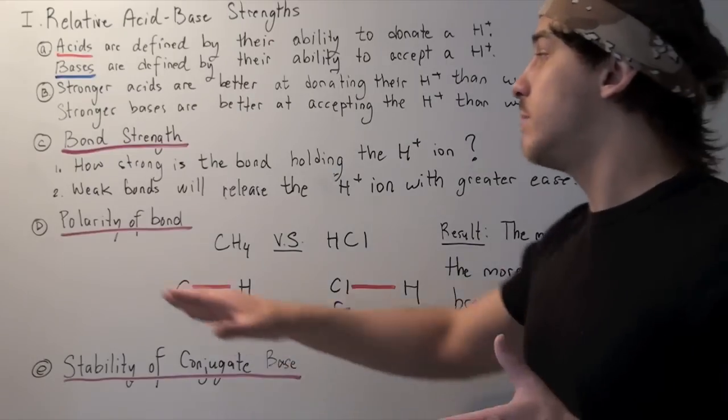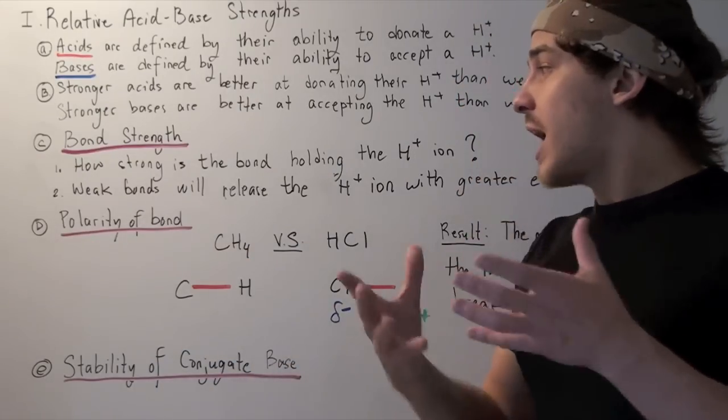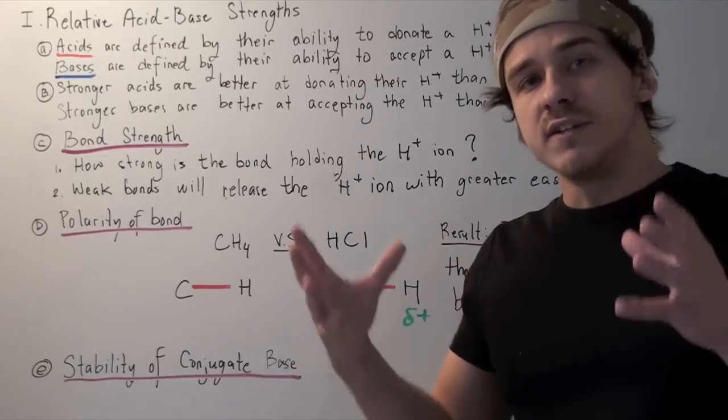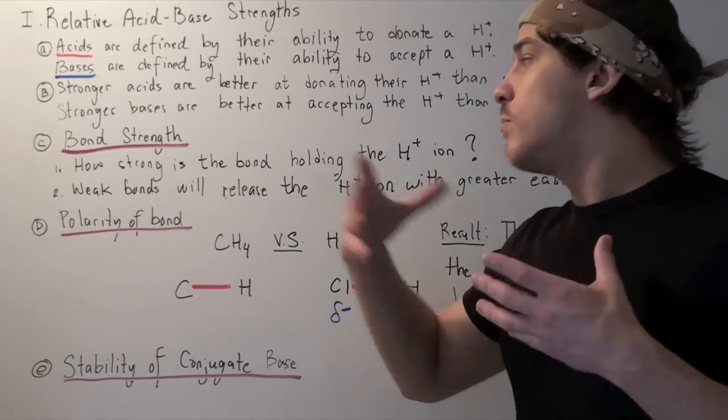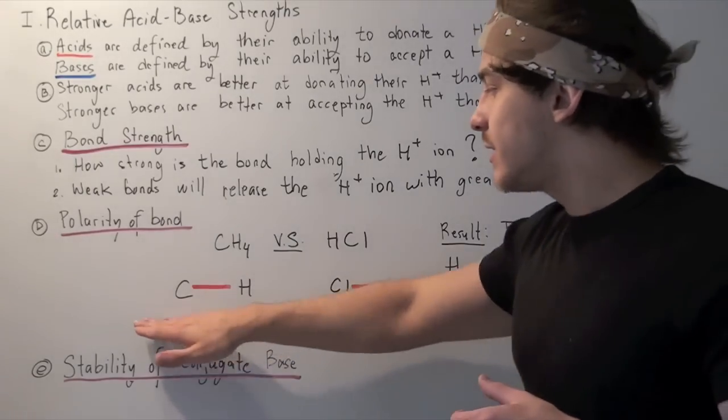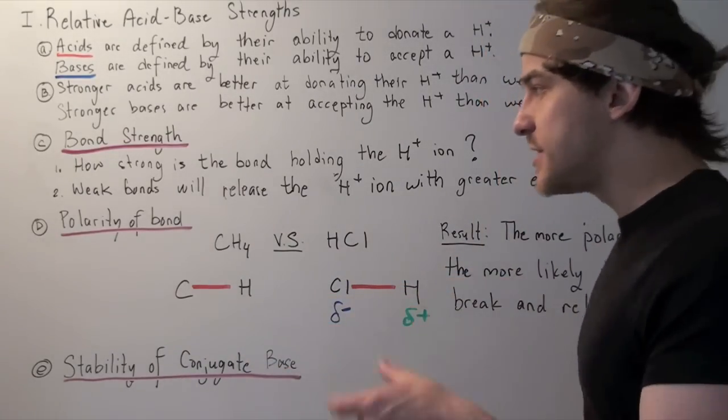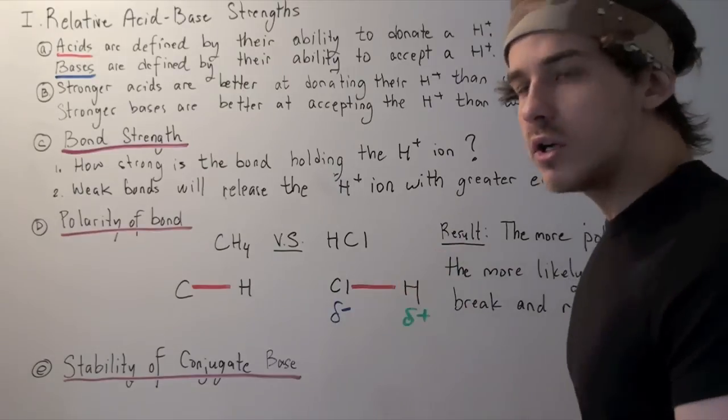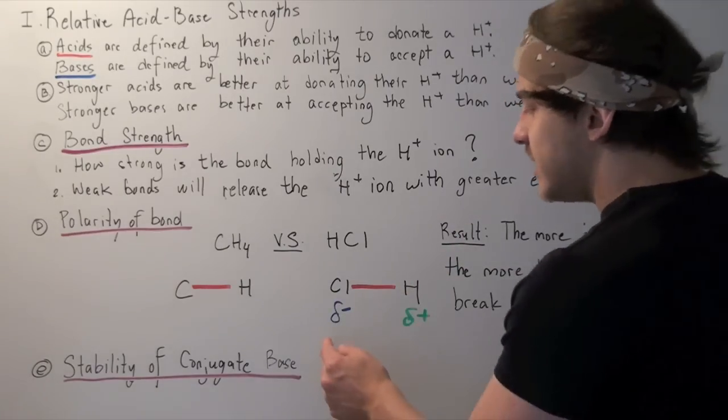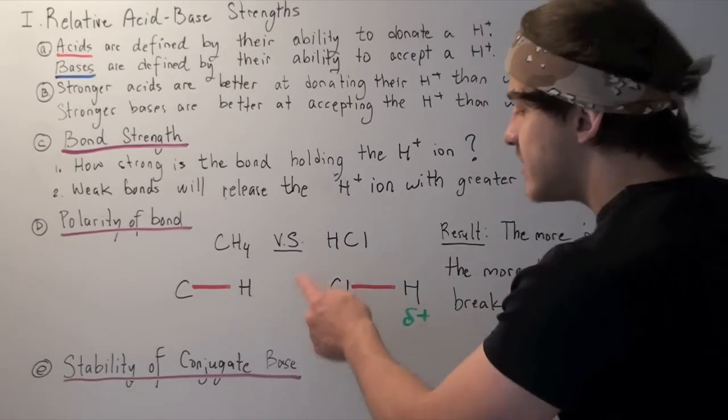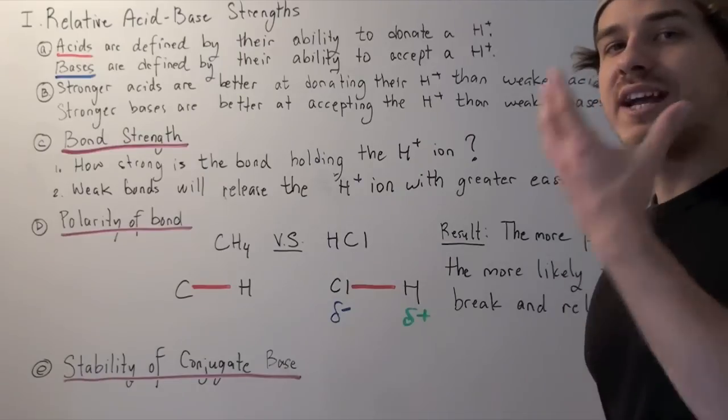We have to look at the polarity. Remember, polarity comes from electronegativity. And the greater the difference in electronegativity, the more polar our bond is. The difference between electronegativity between the C atom and the H atom is smaller than the difference between the Cl atom and the H atom. And that's because this Cl atom is much more electronegative.